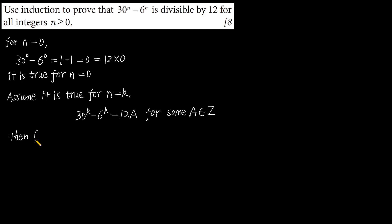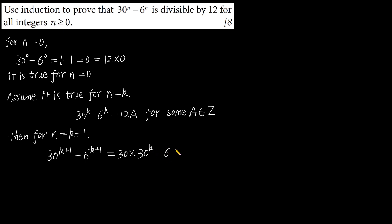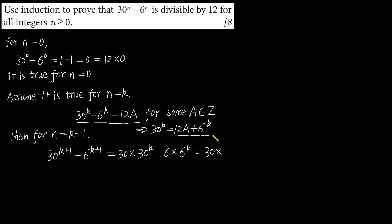Then for n equals k plus 1: 30 to the power of k plus 1 minus 6 to the power of k plus 1 equals 30 multiplied by 30 to the power of k minus 6 multiplied by 6 to the power of k. From the inductive hypothesis, we can get 30 to the power of k equals 12a plus 6 to the power of k. We substitute this in, replacing 30 to the power of k with 12a plus 6 to the power of k.